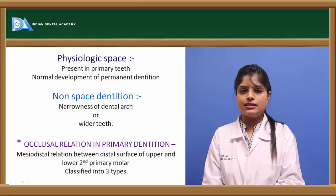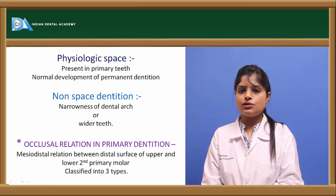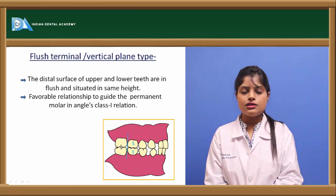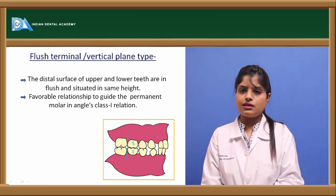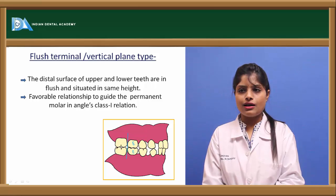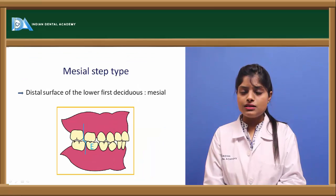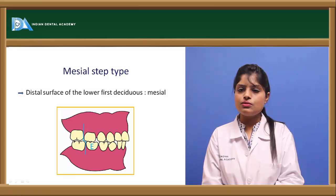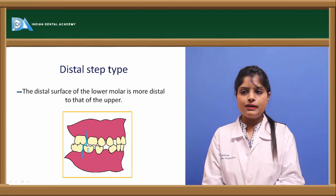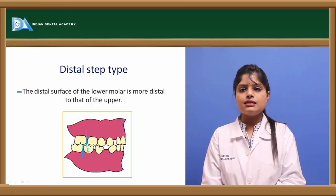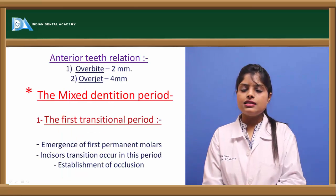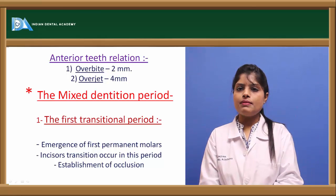In primary dentition, molar occlusion relationships are classified into flush terminal plane, mesial step terminal plane, and distal step terminal plane. The flush terminal plane means the distal surfaces of maxillary and mandibular molars are in the same vertical plane, leading to a Class I occlusion. In the mesial step, the distal surface of the mandibular molar is more mesial than the maxillary. In the distal step, it is more distal. Normal anterior overjet is 2 to 4 mm and overbite is 2 mm.